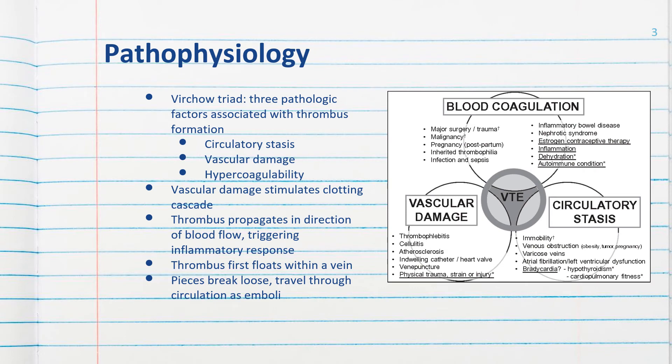Let's address the pathophysiology of DVTs. Three pathologic factors called Virchow's triad are associated with the formation of a thrombus or clot, and those include circulatory stasis, vascular damage, and hypercoagulability.